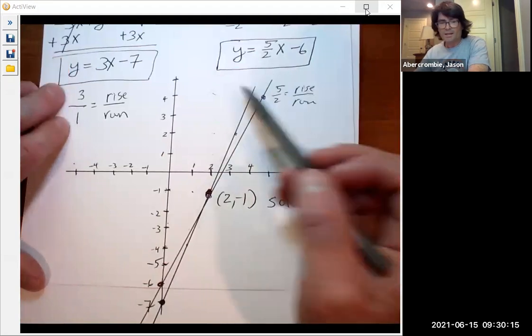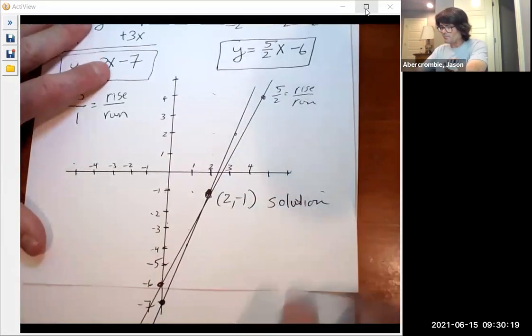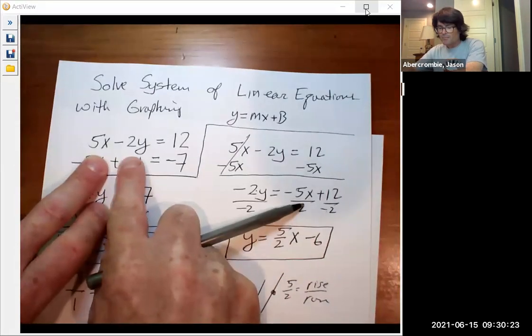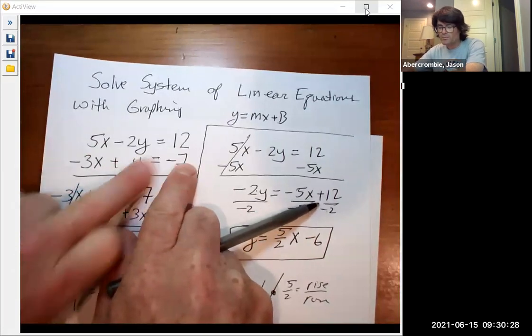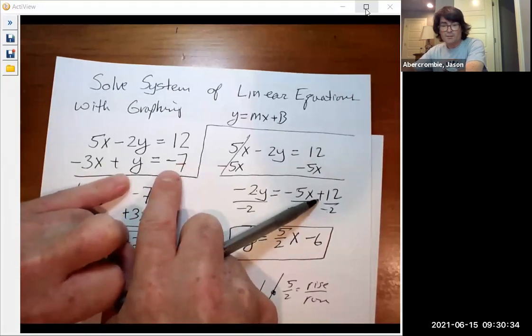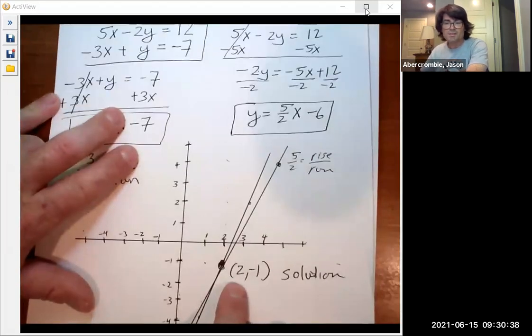And if you go back up here with the 2, -1 to the very original problem, you would see that 2 times 5 is 10, minus 2 times -1 is 2. 10 plus 2 makes 12, that satisfies the first equation. -3 times 2 for x is -6, plus -1 is -7. So that 2, -1 does appear to be a solution.